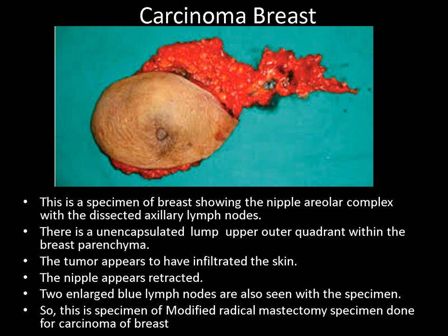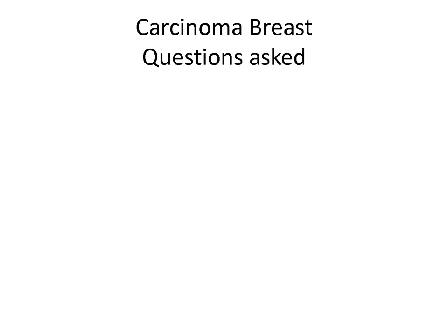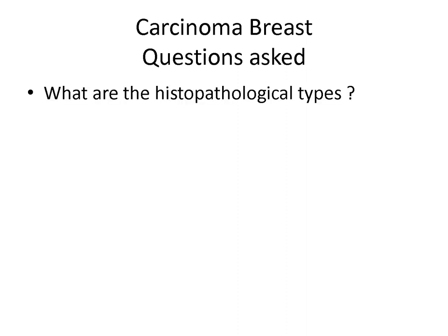I call this specimen as a modified radical mastectomy done for carcinoma of the breast. The examiner can ask you questions on histological types. Depending upon the cell of origin, carcinoma of the breast can be ductal carcinoma, which arises from the epithelial cells lining the mammary duct, or lobular carcinoma, which arises from the cells lining the breast lobules.